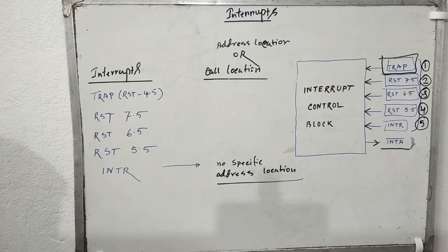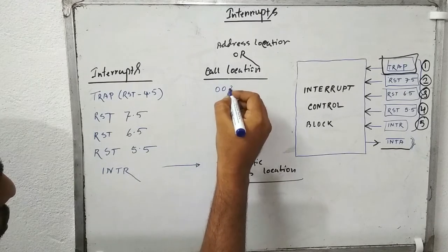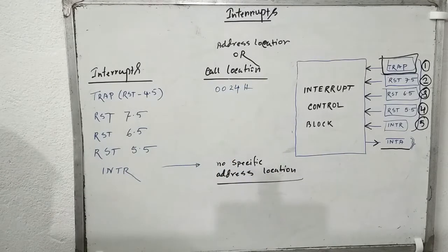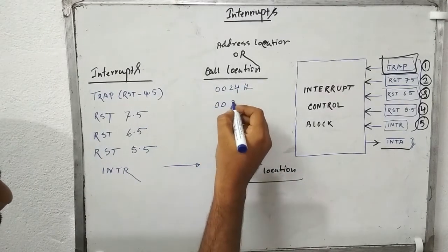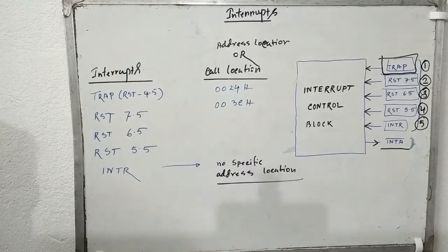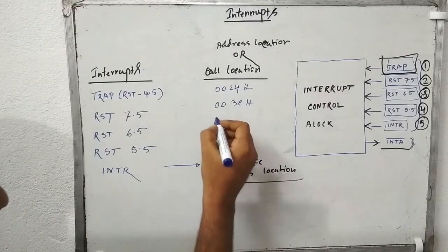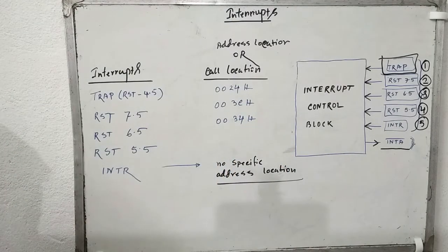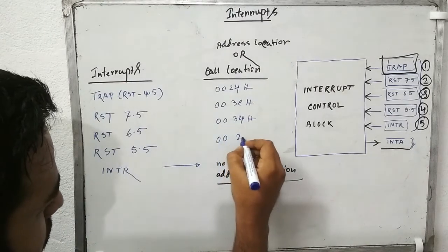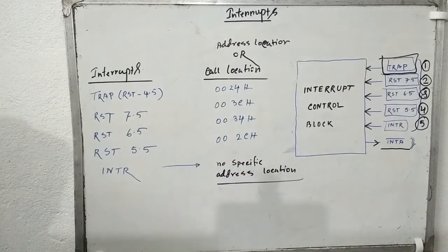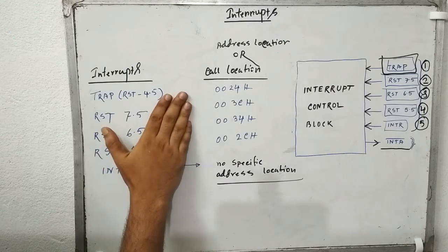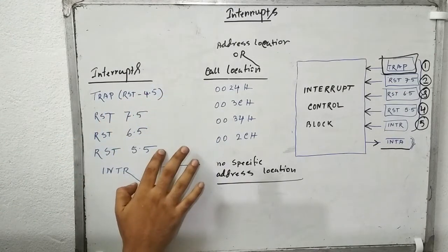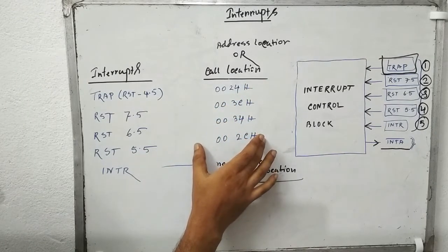Let me first write all the values, then we will calculate them again and verify whether we were right or wrong. For Trap, the address is 0024H. For RST 7.5 it is 003C. For RST 6.5 it is 0034. And for RST 5.5 it is 002C. These are the vector interrupts with their specific vector locations.